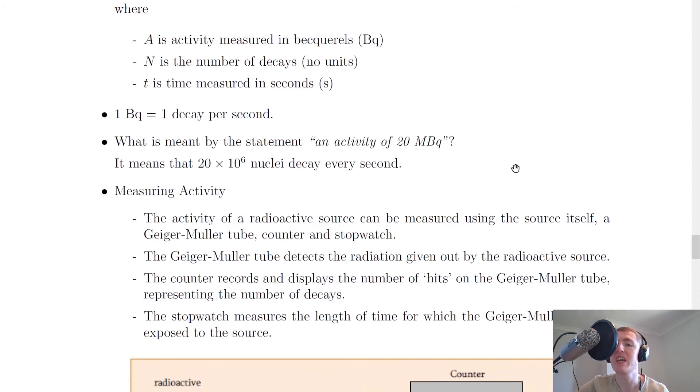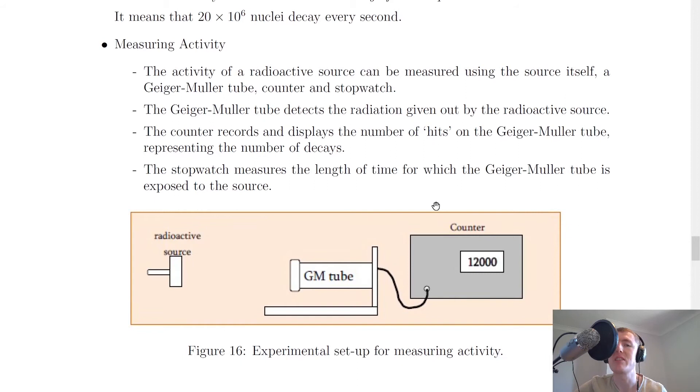All we're doing there is converting 20 mega becquerels into just becquerels, getting rid of the mega prefix, which means we're writing 20 × 10^6. Then we're relating it to the definition of activity—how many decays are happening each second. Make sure you do that if you see a question like this.